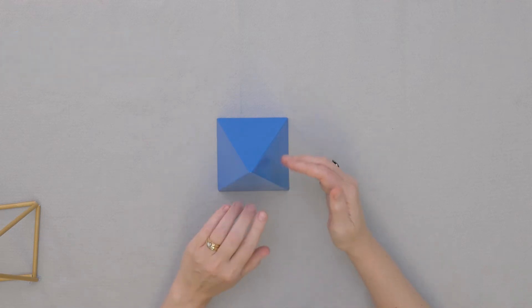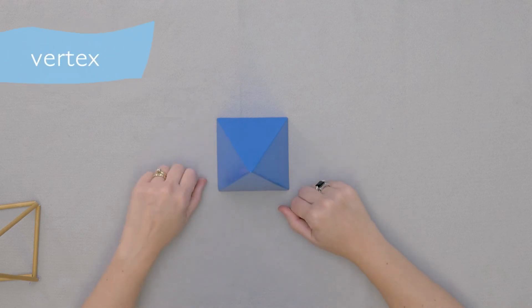Now the place where two faces meet, that line that forms there, is called an edge. And the place where several faces meet together at a point is called a vertex.